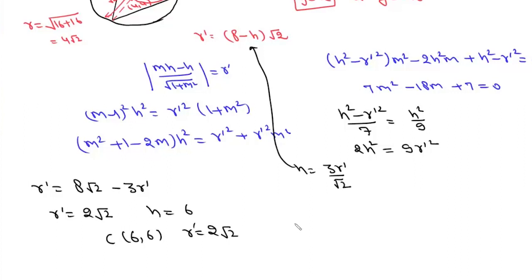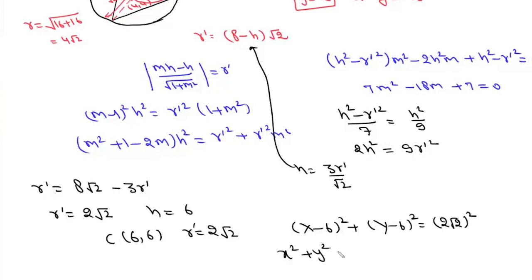The equation of this circle is (x - 6)² + (y - 6)² = (2√2)². Expanding, this gives x² + y² - 12x - 12y + 64 = 0, and that is the answer to this question.